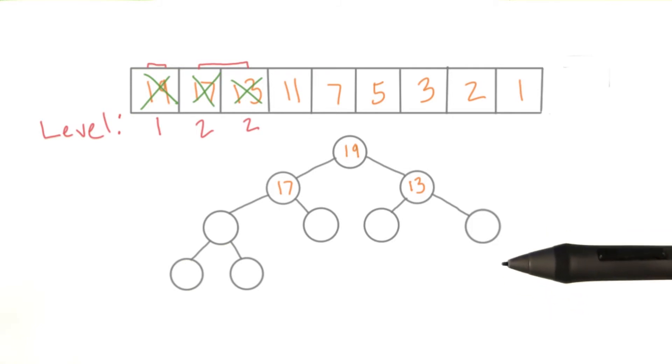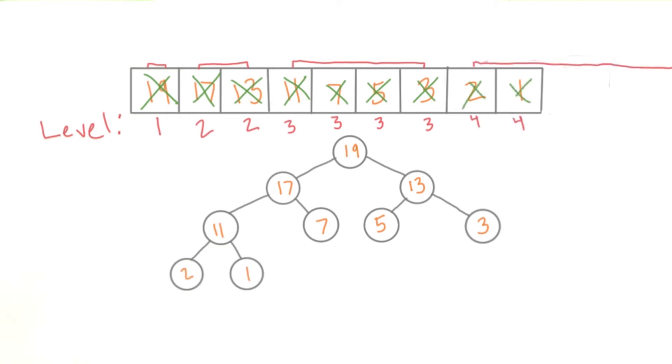Again, each level on the tree is twice as big as the one before it, so we know the next level has four elements. We can do this programmatically by tracking the size of each level in a variable, then doubling it each time we move to a new level. And everything left over fills in the left side of the last level. Now you're done.